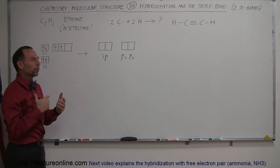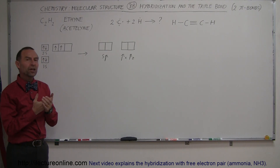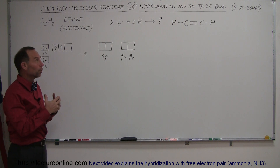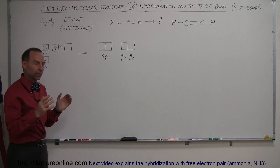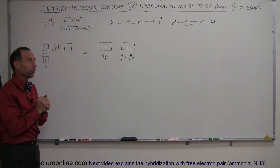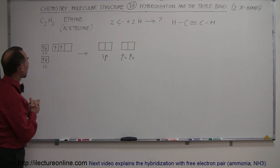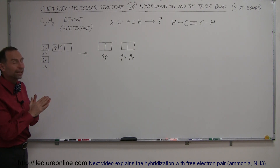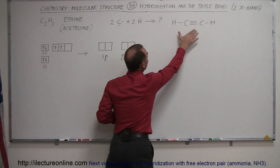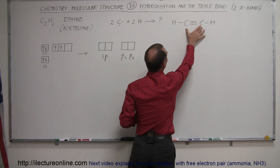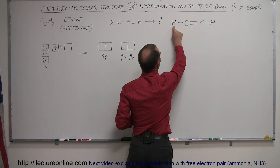In this next example we're going to show another situation where the hybridization is only partial — not all of the available electrons that are ready for bonding will be used in a hybridized orbital, but some will remain in the traditional p orbitals and make bonds that way. Here for example we have C2H2, which is ethyne, also called acetylene — two carbons and two hydrogens. The Lewis structure shows a triple bond between the carbons and a single bond between each carbon and hydrogen.